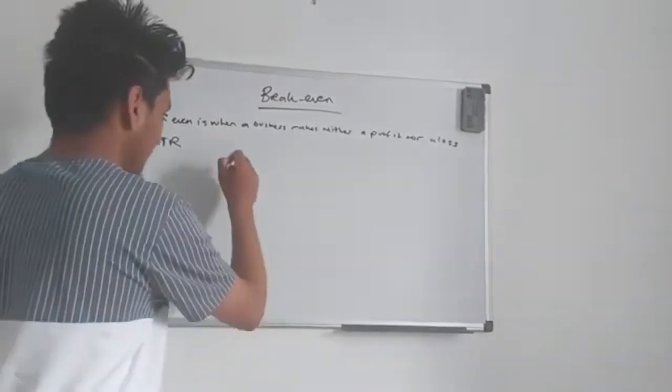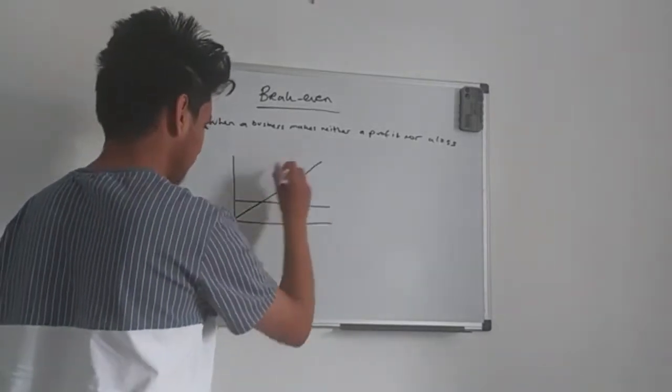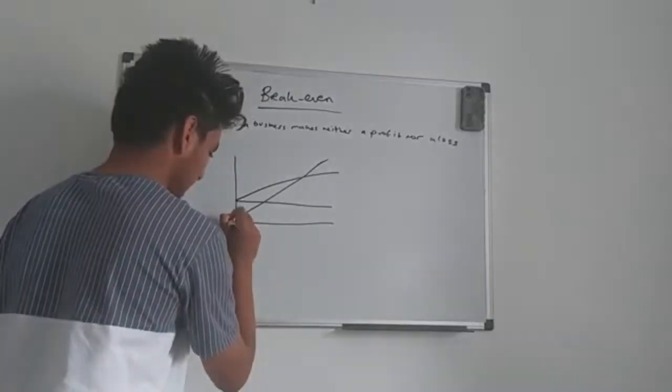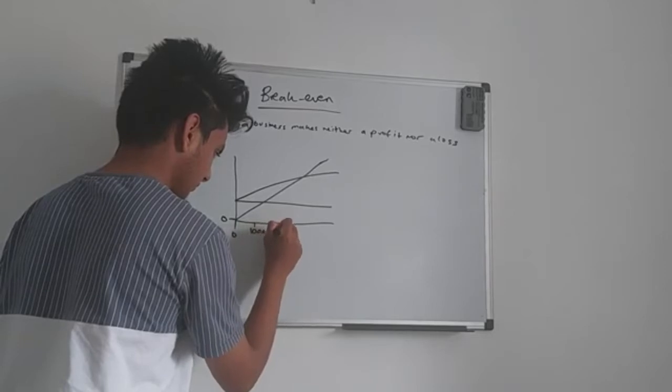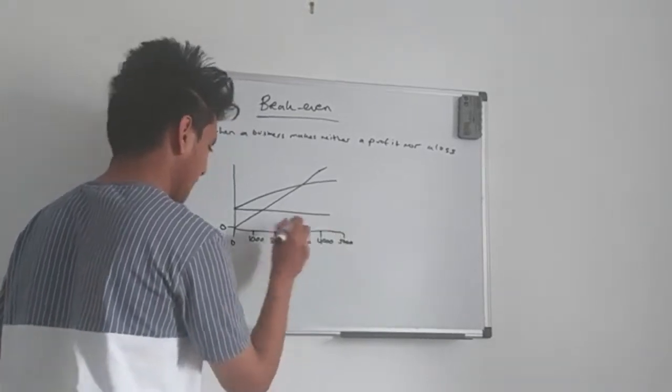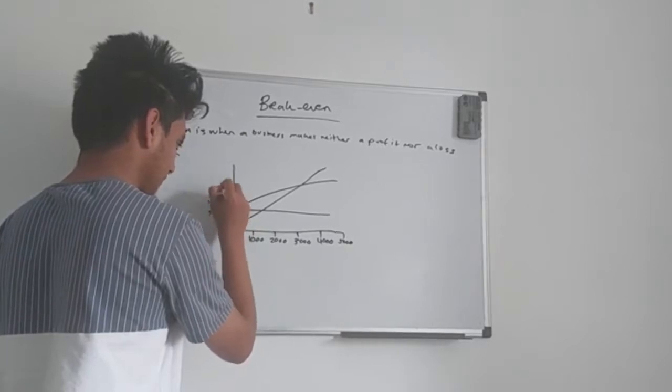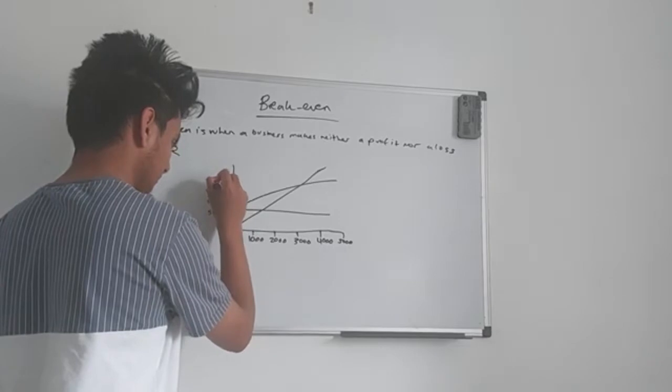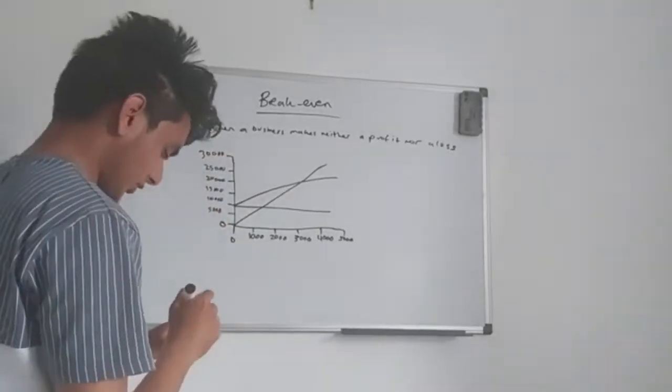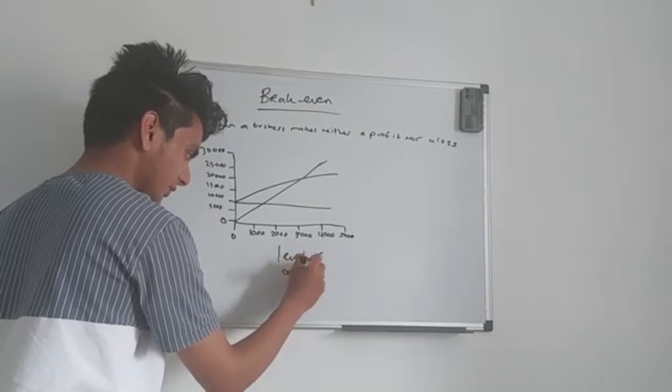So I'll draw you the break even graph. So I'll draw it down here for you. It won't be too big. So here's the graph, I'll label it for you. 30,000. So what I've done here, I've labeled everything. So I just need to do level of output. I'm sure you guys are familiar with this. You've looked at this quite a lot before.